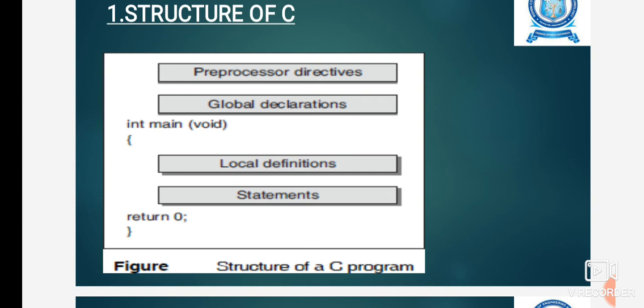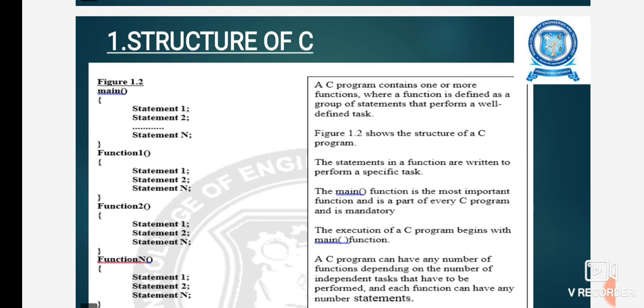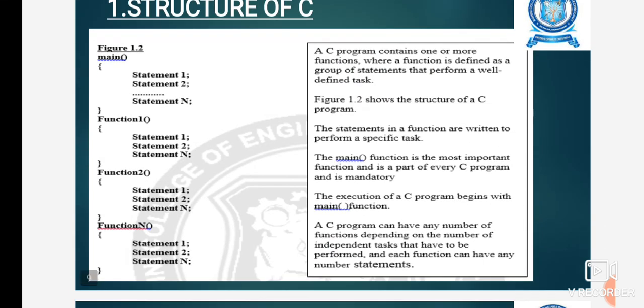This is another structure of a C program. First, declare the preprocessor directive, then global declaration part. Then declare the main function with local variable definitions and statements, return zero, then close the braces. This is a simple example of C program structure.